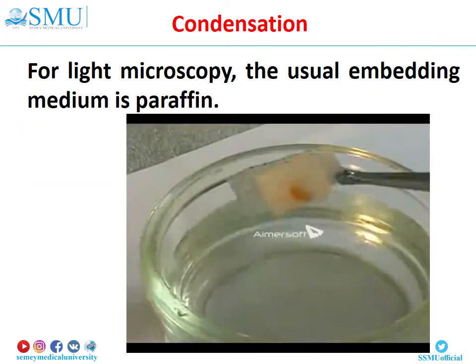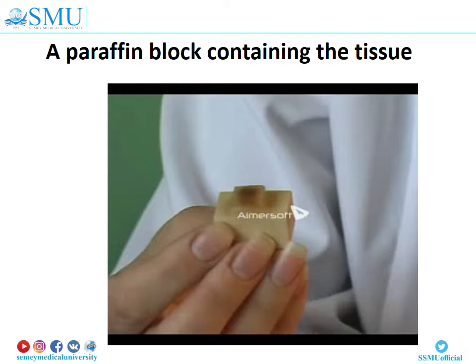For light microscopy, the usual embedding medium is paraffin. The tissue is placed in a container of melted paraffin until it is completely infiltrated by that waxy substance. Once infiltrated, it is placed into a small receptacle, covered with melted paraffin, and allowed to harden, forming a paraffin block containing the tissue. There are disadvantages: it is time-consuming, and the clearing agents are lipid solvents, so this method cannot be used to demonstrate fats. Here you can see a paraffin block containing the tissue.